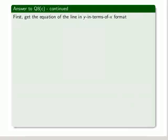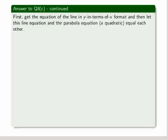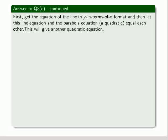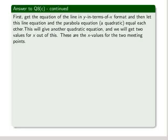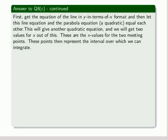First, get the equation of the line in y in terms of x format, and then let this line equation and the parabola equation, a quadratic, equal each other. This will give another quadratic equation and we will get two values of x out of this. These are the x values for the two meeting points we've just mentioned. These points then represent the interval over which we can integrate. Let's go ahead.